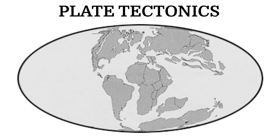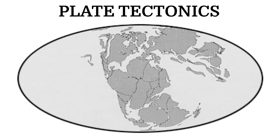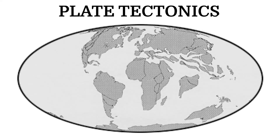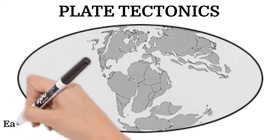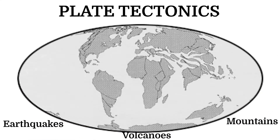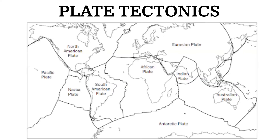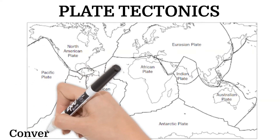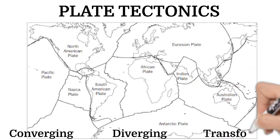As time passes, each tectonic plate is moving very slowly, but they create different geological events such as earthquakes, volcanoes, and mountains. The edges of these plates are one of three types of boundaries: converging boundary, diverging boundary, or transforming boundary.